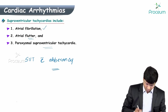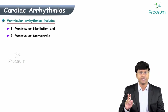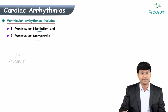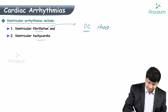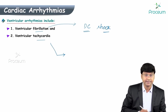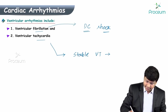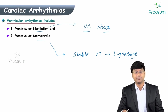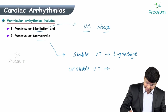Ventricular arrhythmias include two types: ventricular fibrillation and ventricular tachycardia. In ventricular fibrillation, DC shock is always the first-line treatment. In ventricular tachycardia, if it is a stable VT, the drug of choice is lignocaine. If it is an unstable VT where the individual is hemodynamically unstable, the first-line management is DC shock.